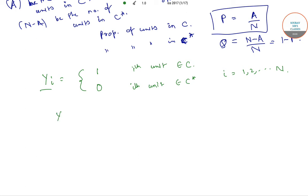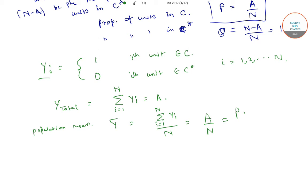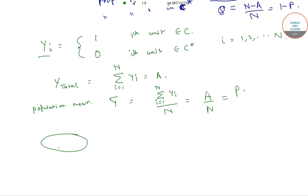The total summation from i equals 1 to capital N of yi equals a. The population mean Y bar equals the summation from i equals 1 to capital N of yi, divided by N, which equals A by N, which equals P. So the population mean equals P.